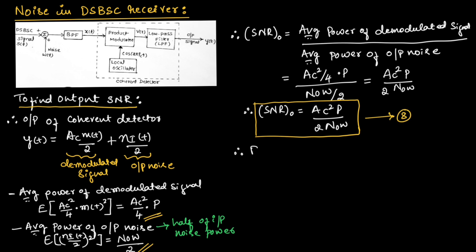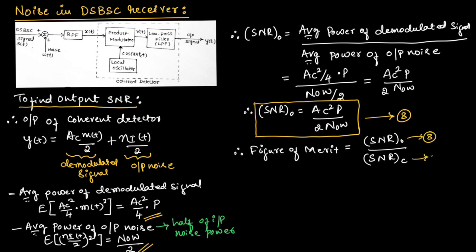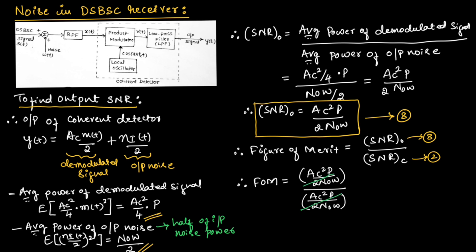Therefore, the figure of merit is the output SNR divided by the channel SNR. Substituting from equations 8 and 2, the figure of merit of the DSBSC signal = [Ac²P / (2N₀W)] / [Ac²P / (2N₀W)] = 1. This is about noise in the DSBSC signal. Hope you have understood the topic. Thank you.